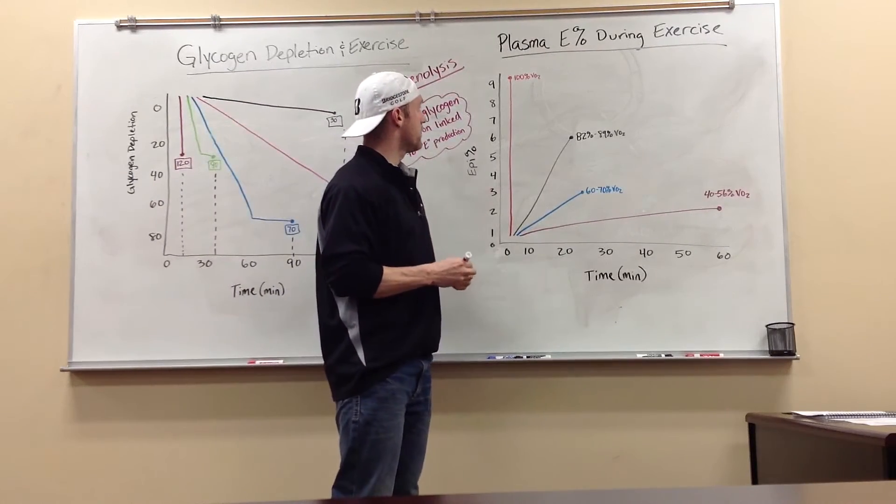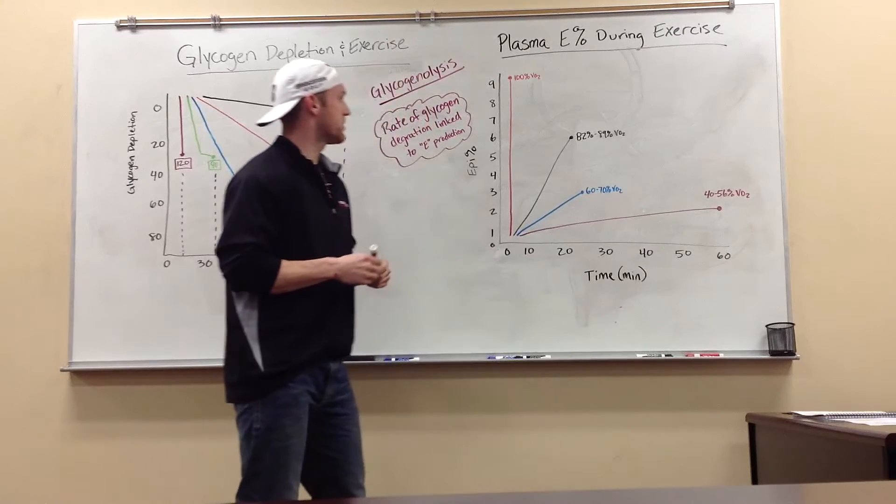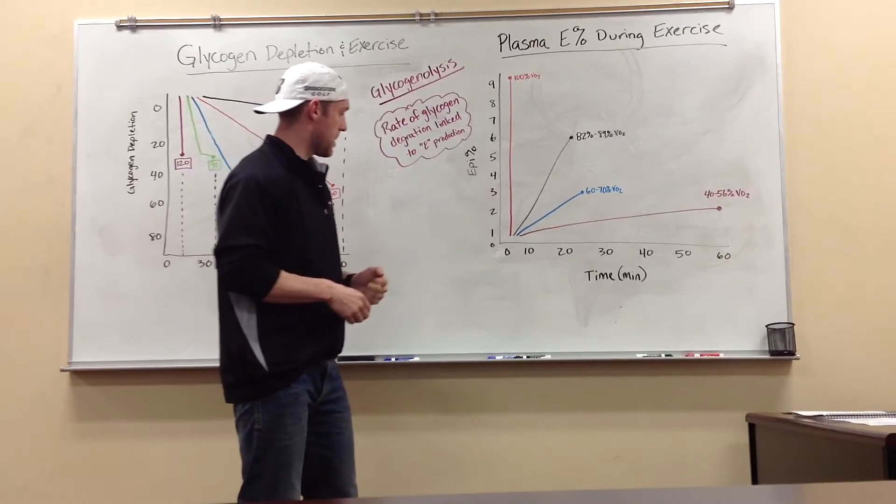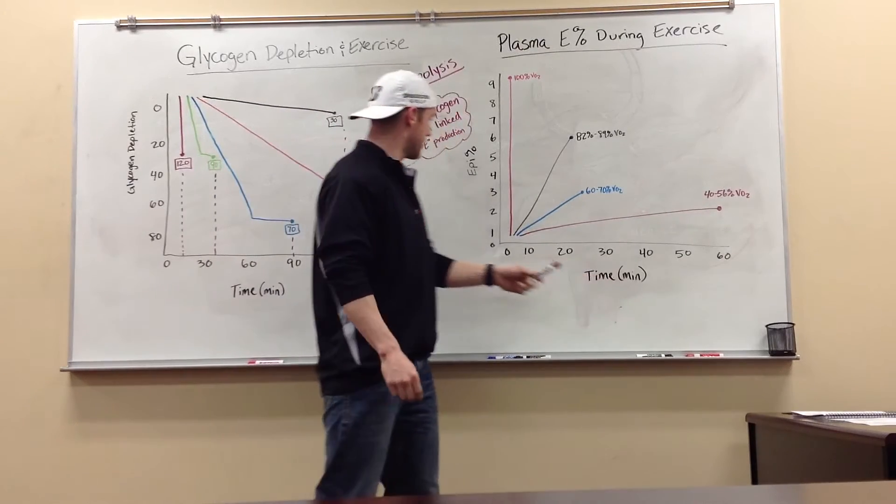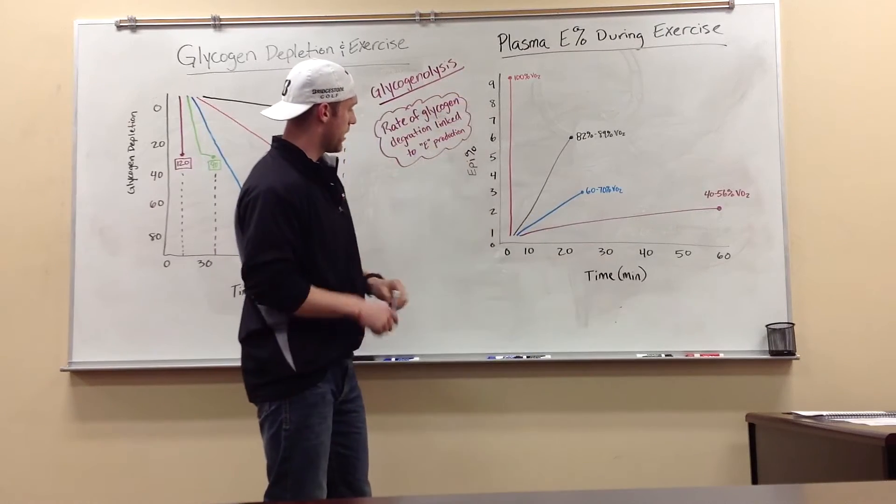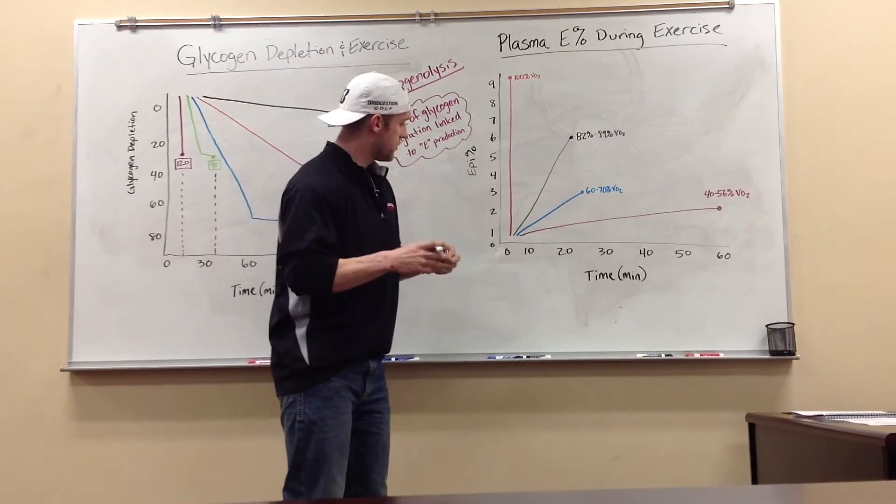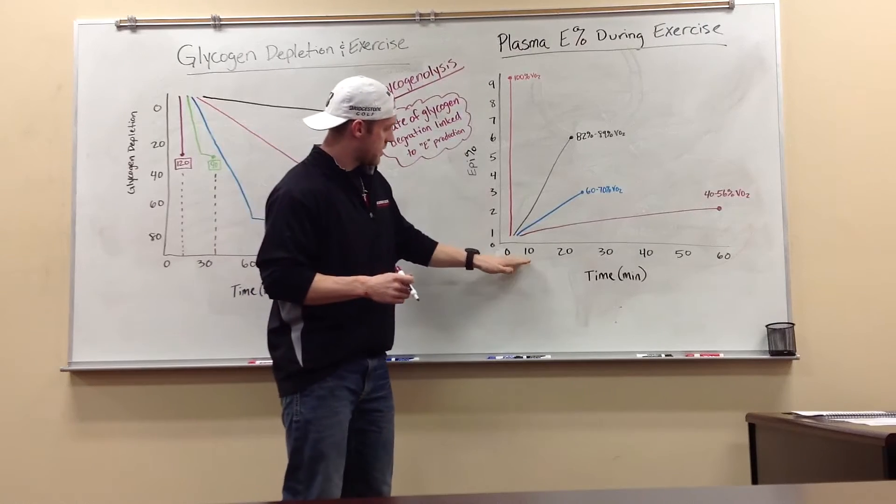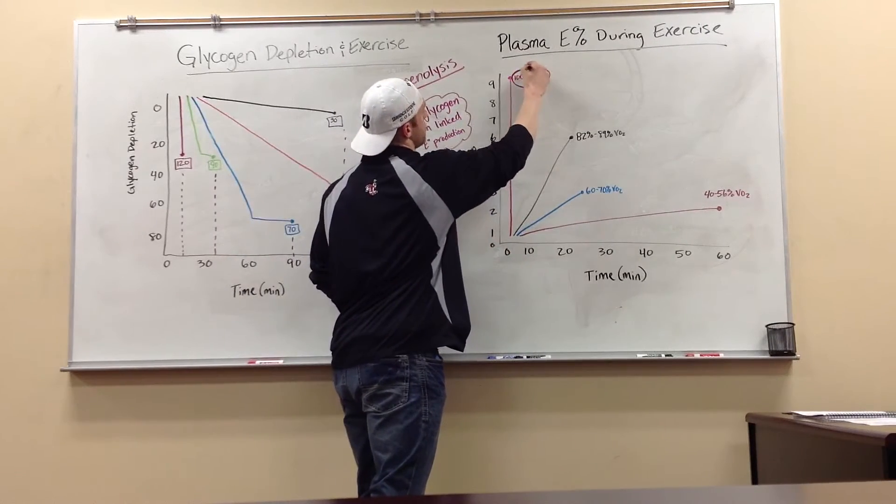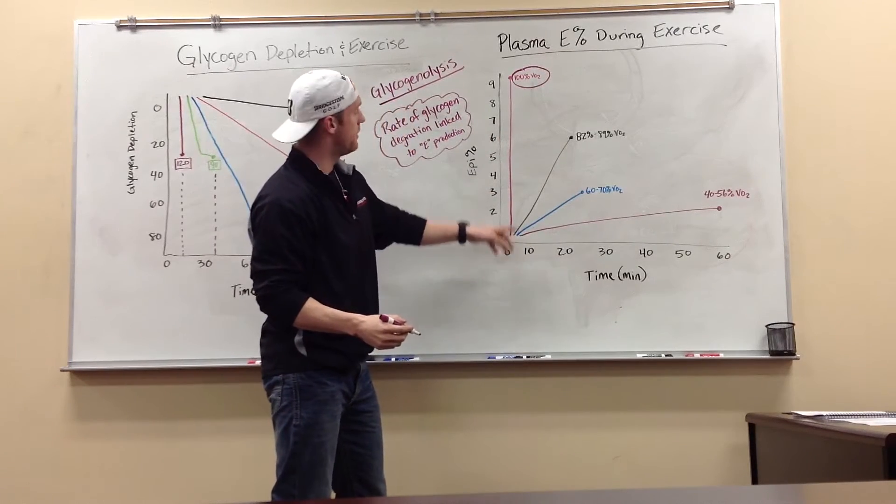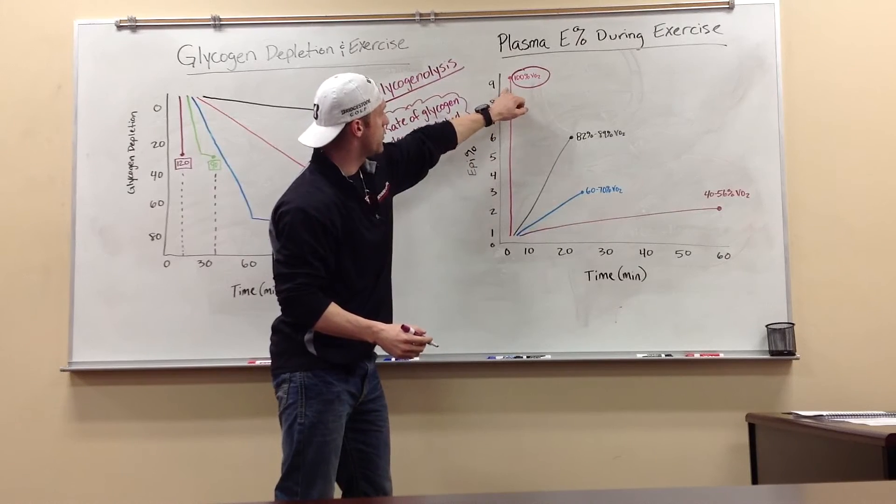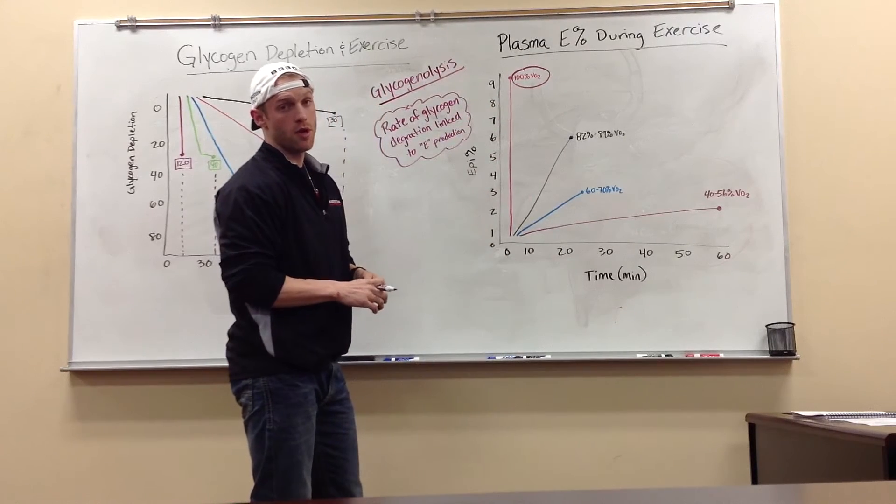Transferring over to epinephrine percentage or concentration during exercise, it's pretty much the exact opposite. We have our exercise time down here in minutes and our epinephrine concentration levels right here. As you can see, our intensity at 100% is going to be a short time frame as well, but it's going to increase our production of epinephrine in our blood.